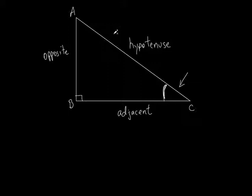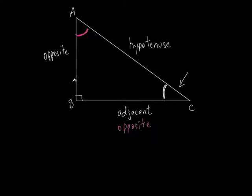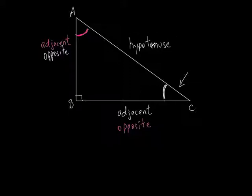In the same triangle, what if I was talking about angle A? Side BC — which was adjacent to angle C — is what to angle A? It's across from it, or opposite. I'll put this in a different color. Side BC is opposite angle A. But side AB is adjacent to angle A. It all depends which angle you're talking about. The hypotenuse is always side AC because it's opposite the right angle.